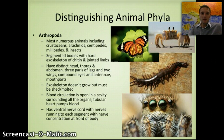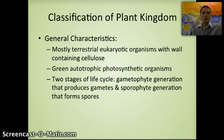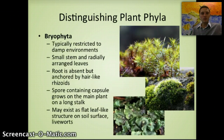Moving to the plant kingdom: general characteristics include being mostly terrestrial eukaryotic organisms with cell walls containing cellulose. They are able to photosynthesize and usually have two life cycle stages — the gametophyte generation that produces gametes, and the sporophyte generation that forms spores.